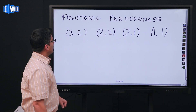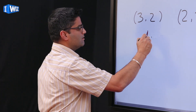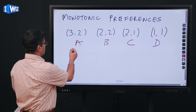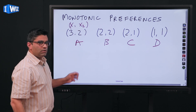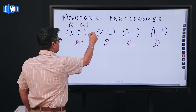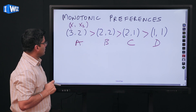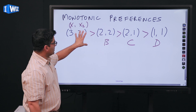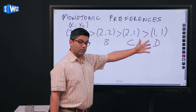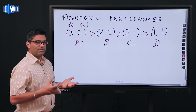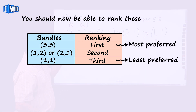Let's look at an example. Given four bundles A, B, C, and D, you should be able to rank them — each bundle has x1 as the first good and x2 as the second good. Bundle A will always be preferable to B, which is preferable to C, which is preferable to D. Since A is preferable to B and B is preferable to C and D, A is preferable to all three. I'm happiest with A, then B, then C, and D gives us the least happiness. This is what we mean by ranking monotonically.